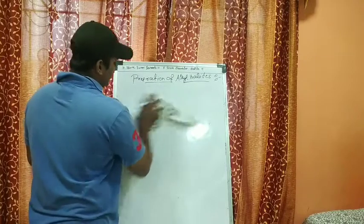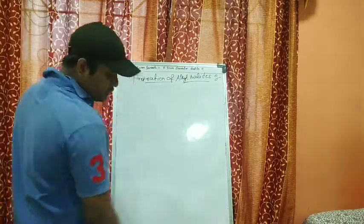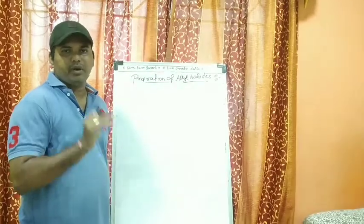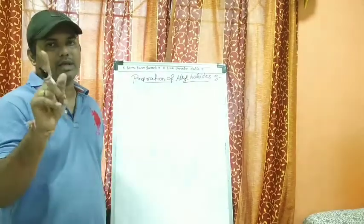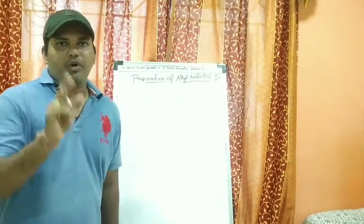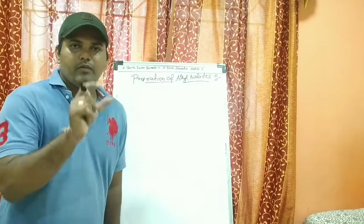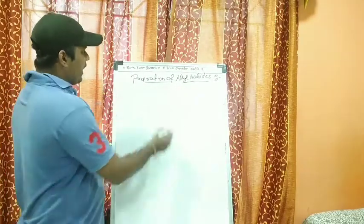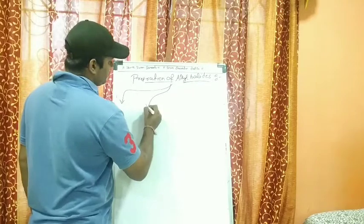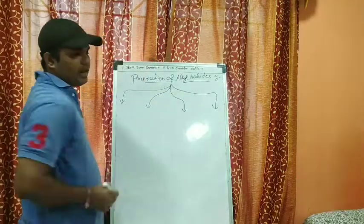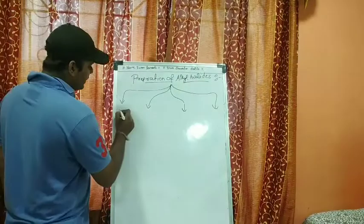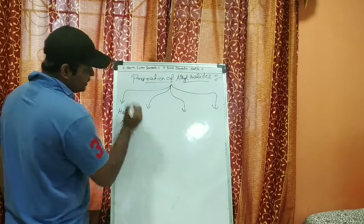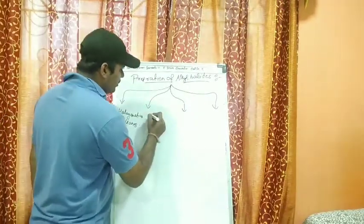Now let's move forward and see the preparation methods of alkyl halides. This is a very important question — it can be asked for three marks or as a two-mark sandwich question requiring you to complete a reaction. Basically there are four methods: number one, by halogenation of alkanes; number two, by addition of acid halides to alkenes.